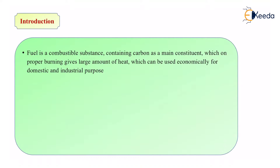Most of the fuels that we use today contain carbon as the major constituent. Let's take some examples. To run our vehicles like cars, buses, trucks, etc., we use petrol. What is petrol? It contains carbon and hydrogen — that means it is a hydrocarbon. A substance containing carbon and hydrogen is known as a hydrocarbon.